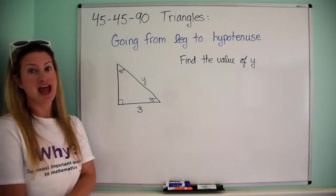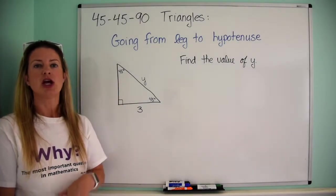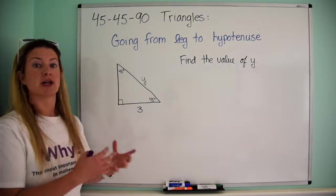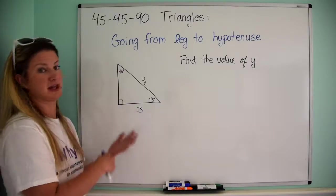Specifically 45-45-90 triangles and how to go from the leg to hypotenuse. So what I mean by that is if you're given the measure of the leg, how to find the measure of the hypotenuse.